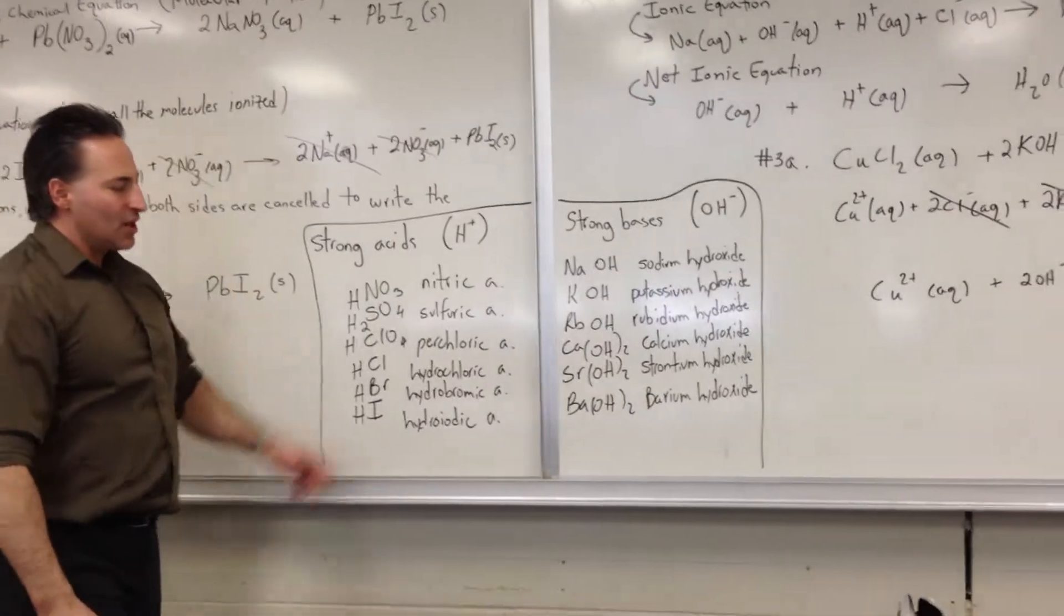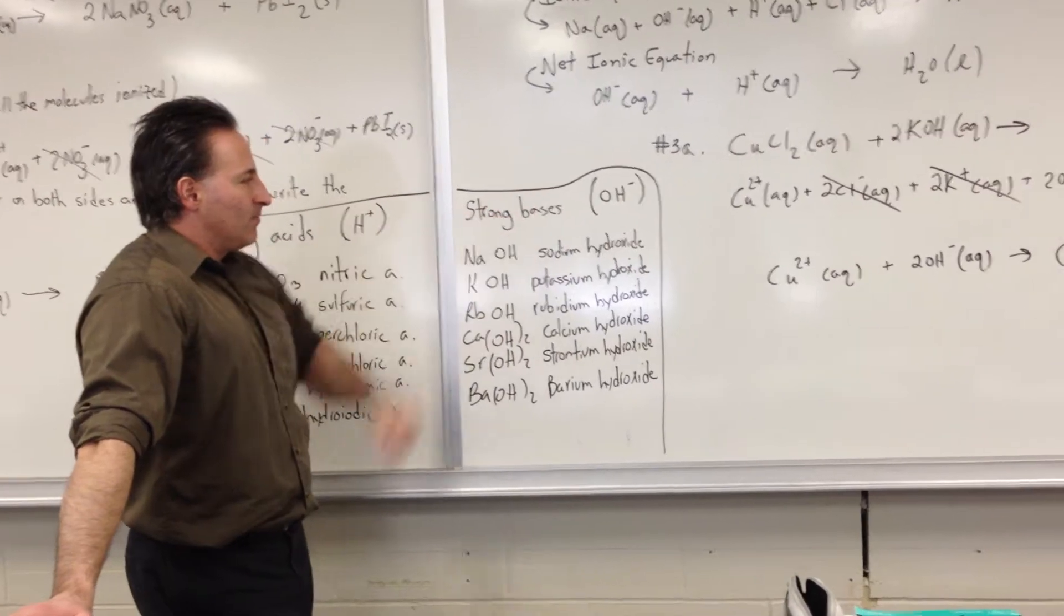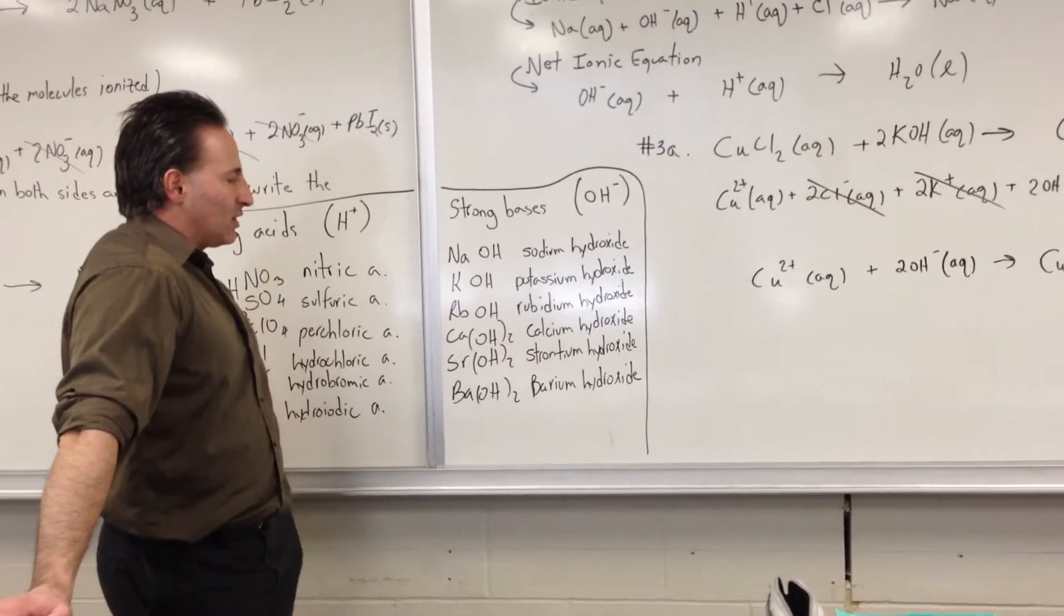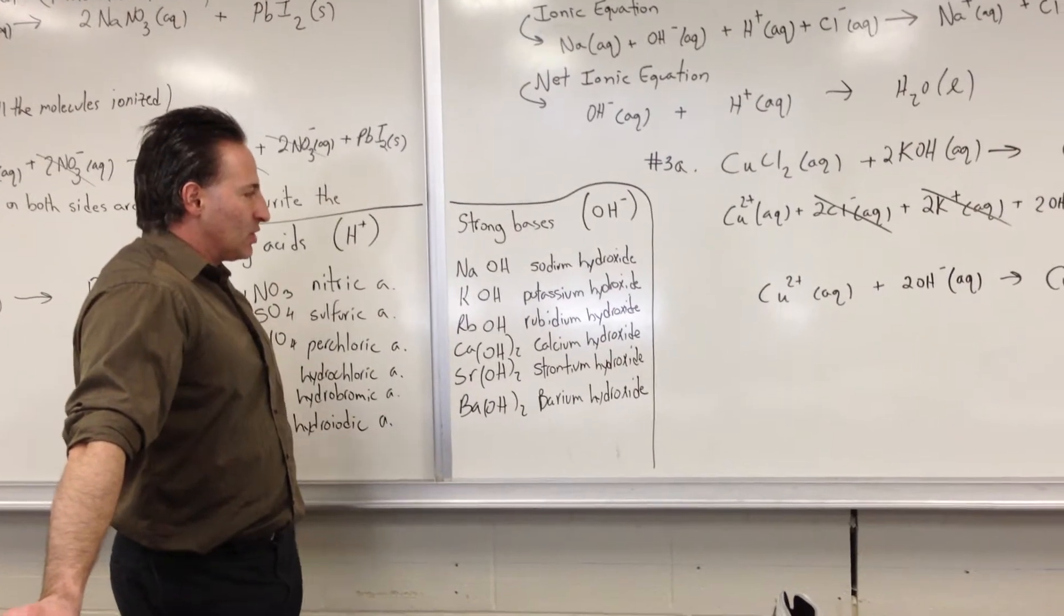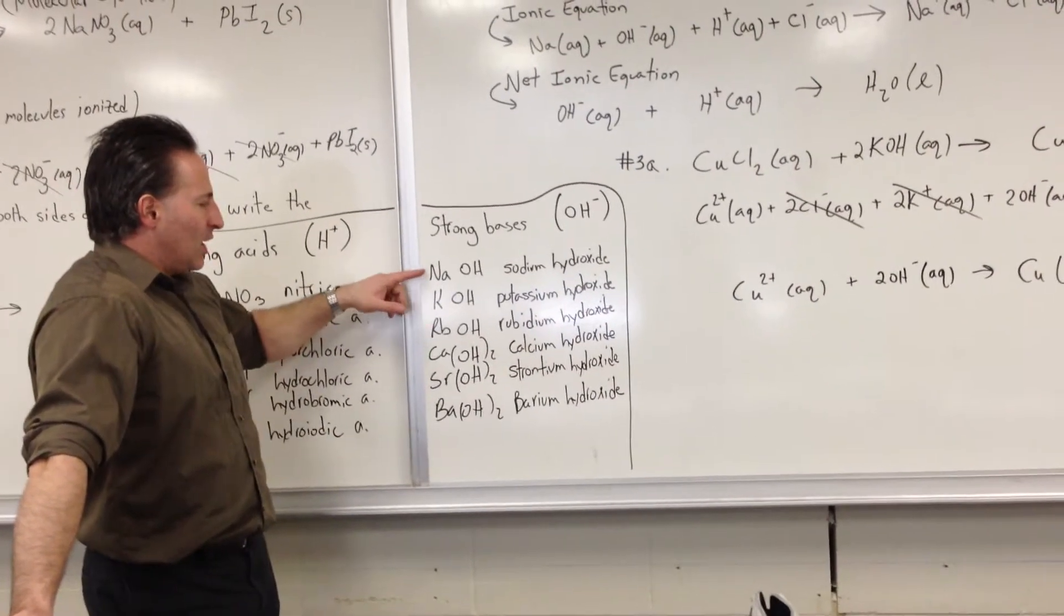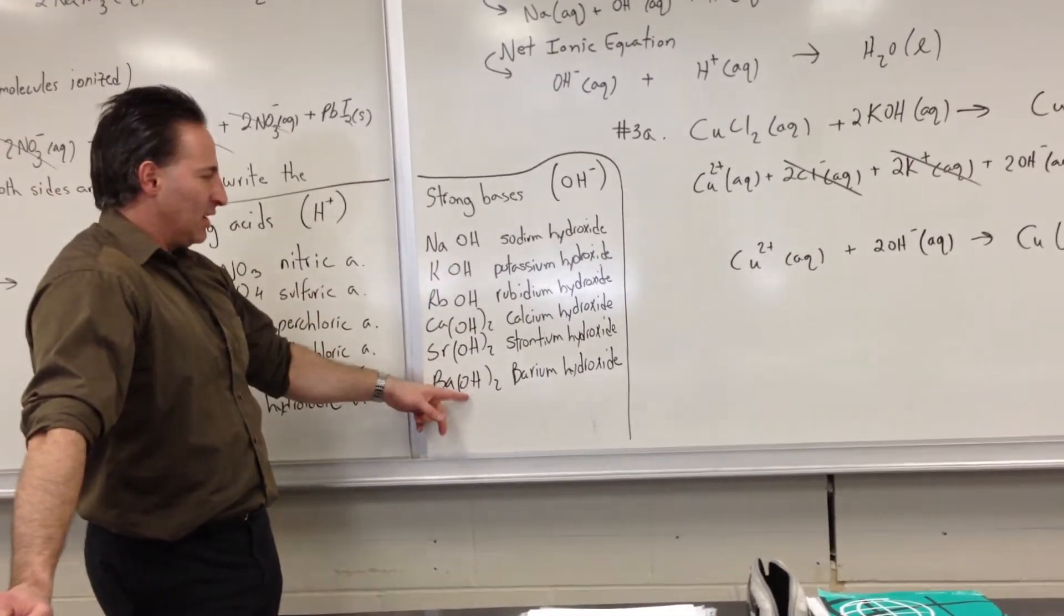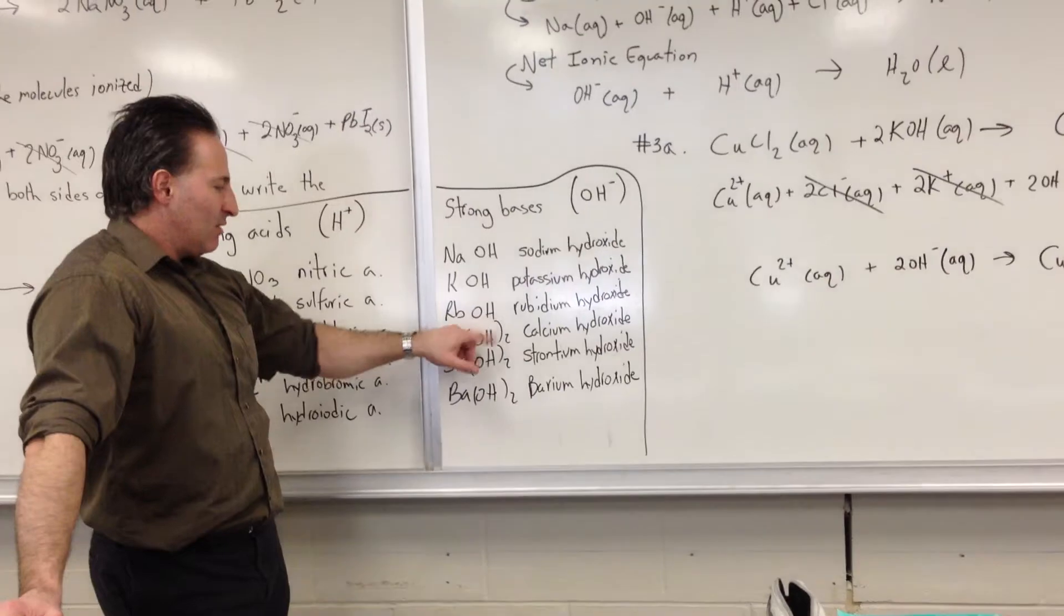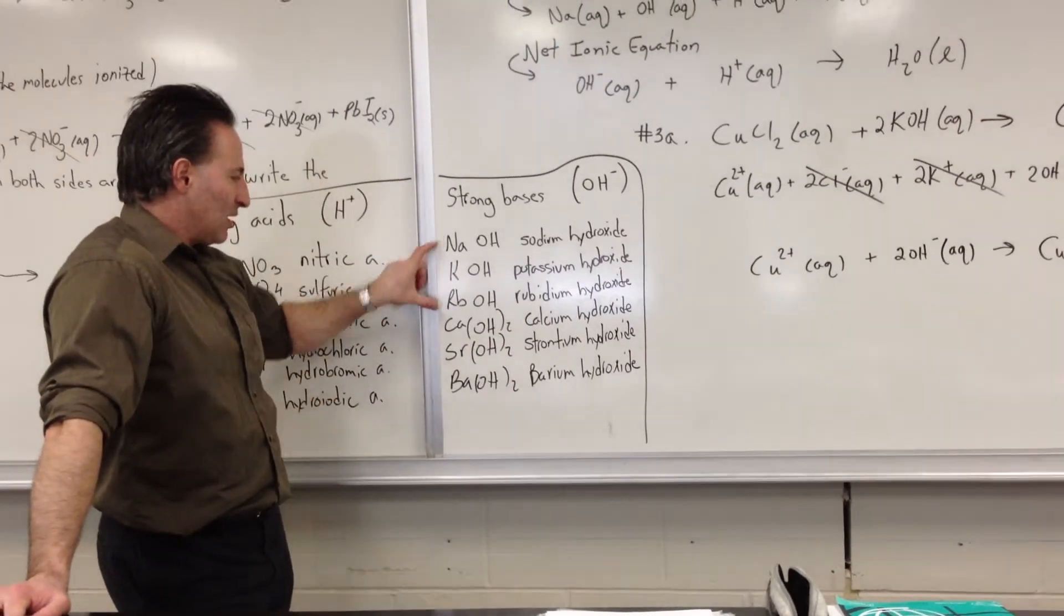There's another mnemonic that you can use to memorize what the strong bases are. These are solutions that will form hydroxide ion in aqueous solution. Strong bases are Nacherb, Cassurbot, and then you put OH after everything. The last three have OH taken twice because they're group 2 metals. So group 1 metals, group 2 metals.